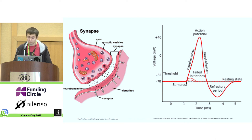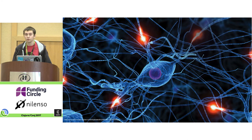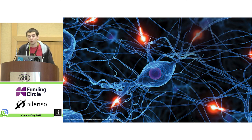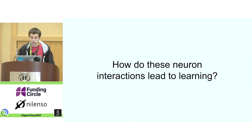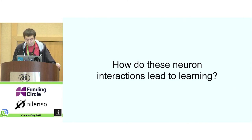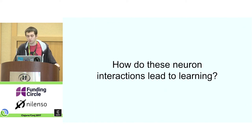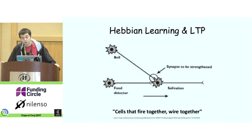With just two cells you can't do much, but when you network these things together with n different connections you have a very chaotic system where emergent behavior starts to come out — that emergent behavior is us: our thoughts, our memories, our perceptions of the world. The question becomes how do these neuron interactions actually lead to learning? It's a problem we've been tackling for the last 60 years. We have a decent understanding of two forms: associative learning and non-associative learning.